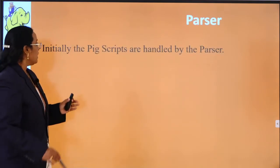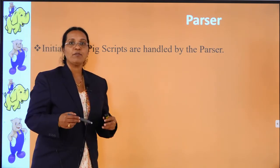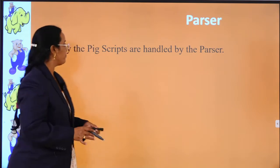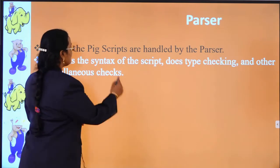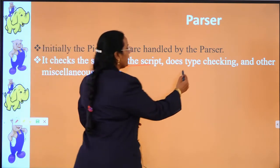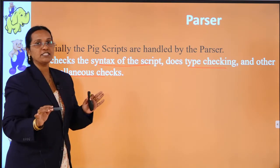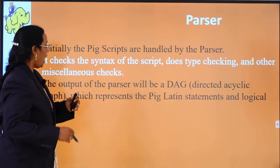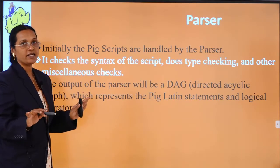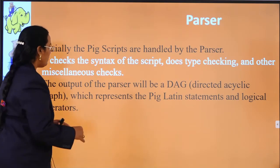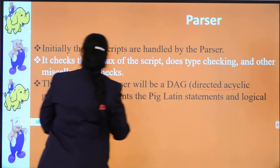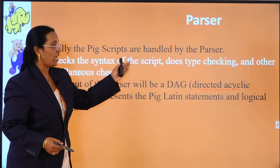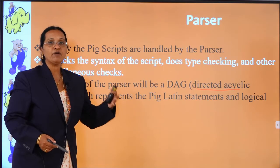The parser initially handles the Pig scripts. The Pig script is first given to the parser, which checks the script for type checking and miscellaneous checks to verify there are no errors. If everything is correct, the output of the parser will be in the form of a DAG — a Directed Acyclic Graph — which represents the Pig Latin statements and logical operators.